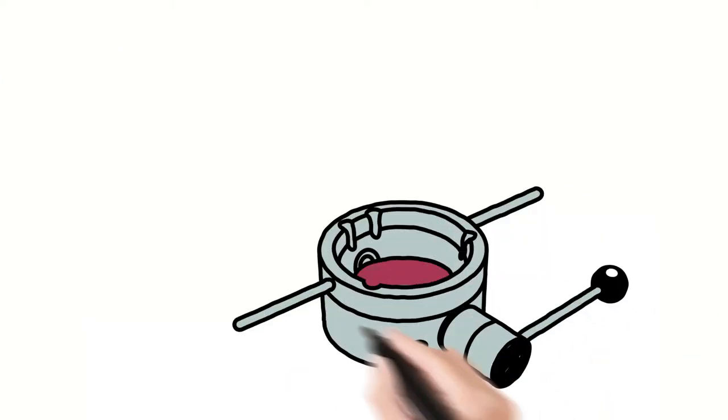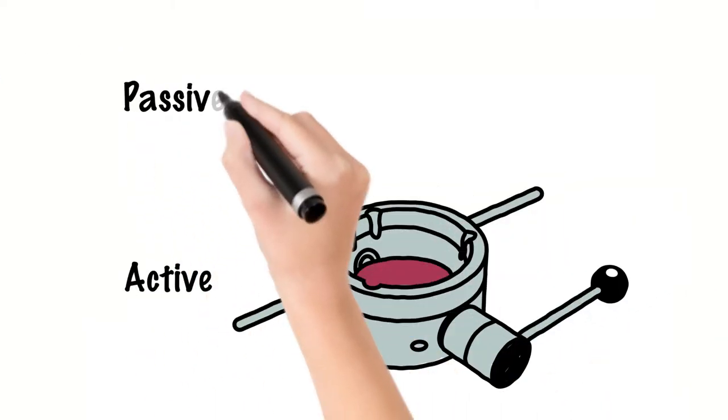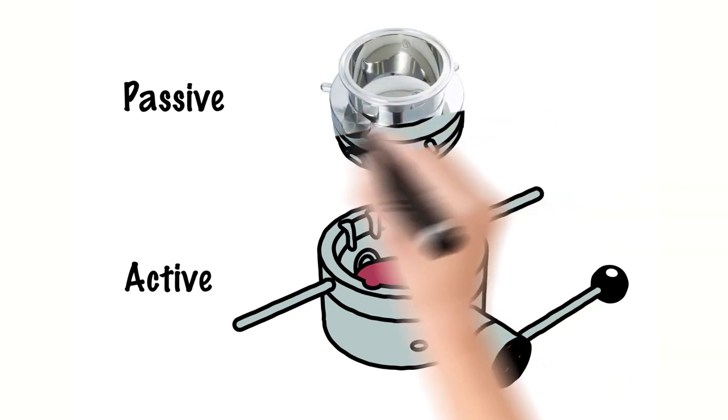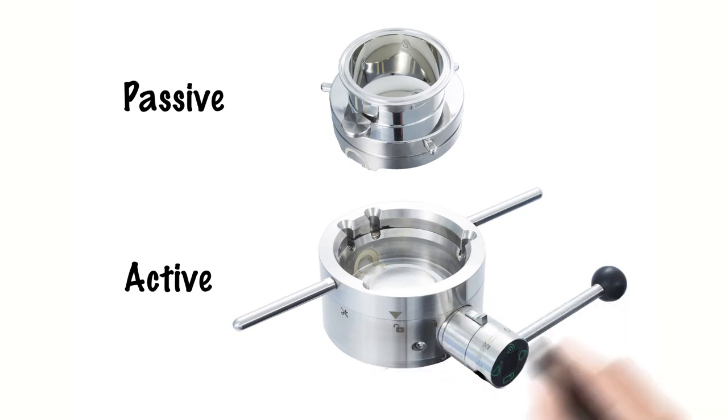PharmaSafe valves consist of two halves, the active and the passive. Each half consists of half of the butterfly disc which seals against the main body via an elastomeric seat.